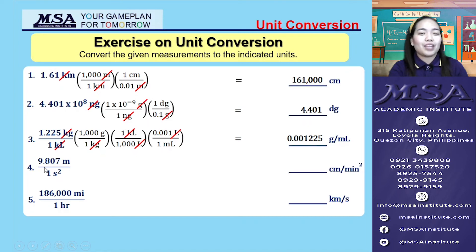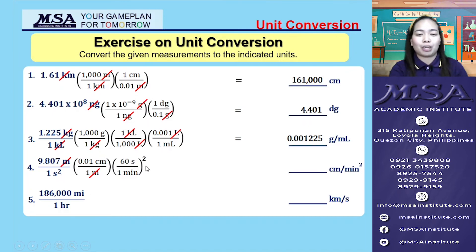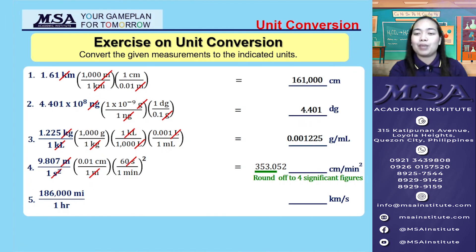For number 4, we have 9.807 meters per second squared. We convert meters to centimeters using the appropriate conversion factor, cancel the meters, then cancel the seconds squared. Since the unit has an exponent, we square the conversion factor as well. The calculation gives 353.052 centimeters per minute squared, and rounded to 4 significant figures the final answer is 353.1 centimeters per minute squared.